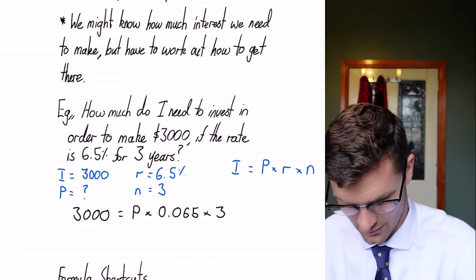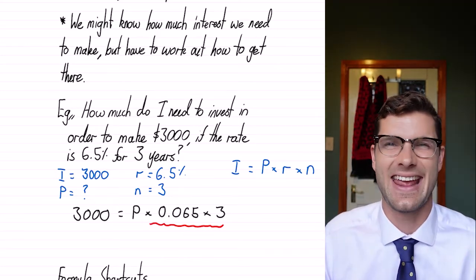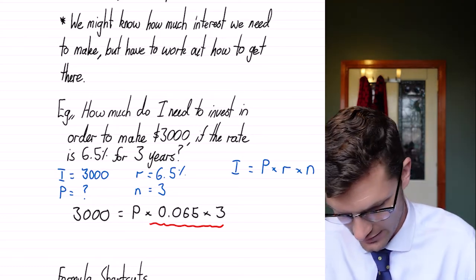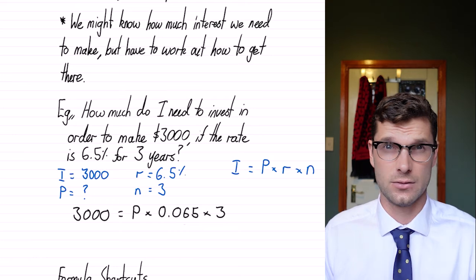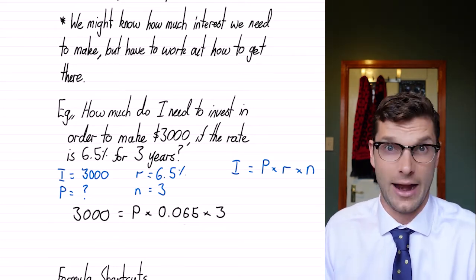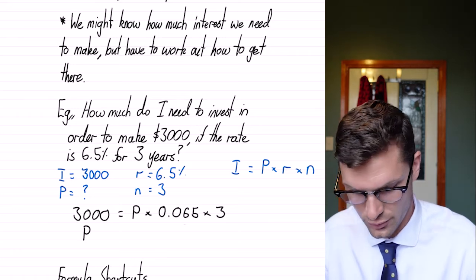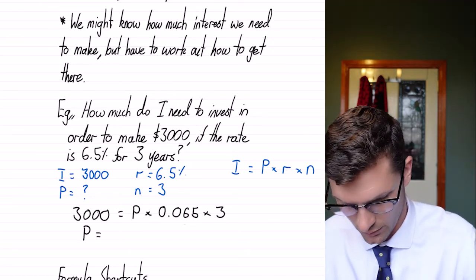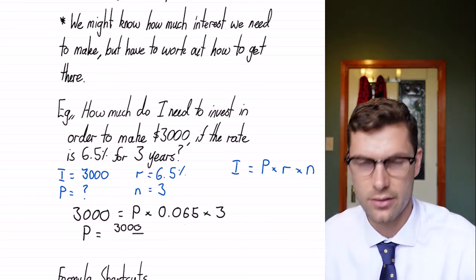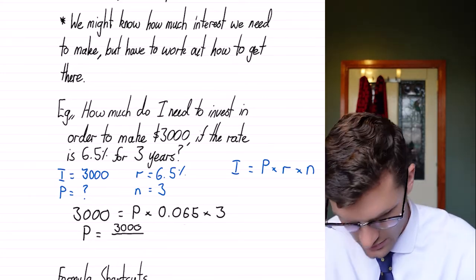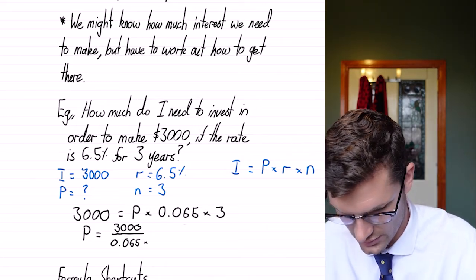So all we have to do is divide these two off. What you could do is multiply these together to get one number in your calculator, but that's an extra step that I don't want you to have to take. Instead, we can just divide those things off together. Kind of imagine there's brackets around them. So our answer for this is the principle is equal to 3,000 divided by the 0.065 times three.